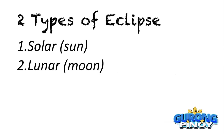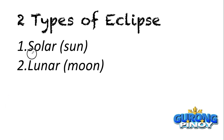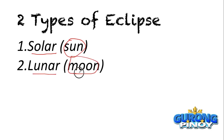We have two types of eclipses: the solar eclipse and the lunar eclipse. Solar means the sun, and lunar means the moon. In a solar eclipse, the sun is covered by another heavenly body. In a lunar eclipse, the moon is covered by another heavenly body. When talking about the major heavenly bodies — the sun, the moon, and the earth — eclipses happen when these three align or form a line.